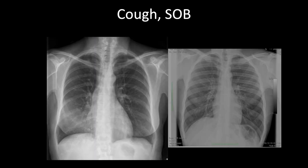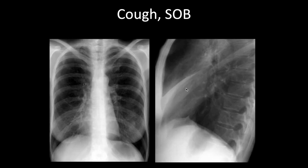The last lobe: middle lobe collapse. There's less air, obscured lung markings, and obscuration of the right heart border — airspace disease in the middle lobe. A lateral film is needed. On the lateral, instead of a normal middle lobe, there's a thickened band — the collapsed middle lobe. The middle lobe collapses like a clamshell, with both the horizontal and oblique fissures opposing. This small band represents the deflated collapsed middle lobe.